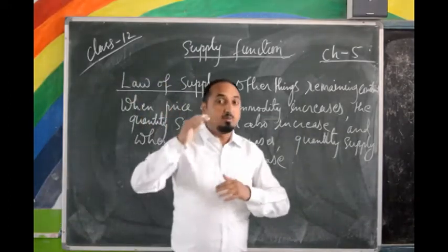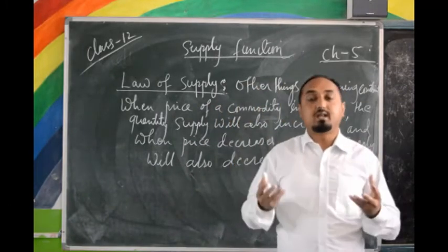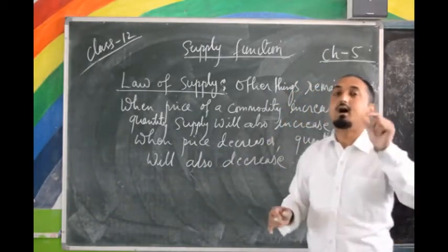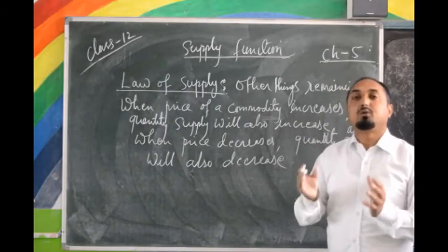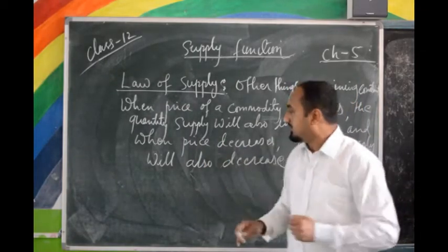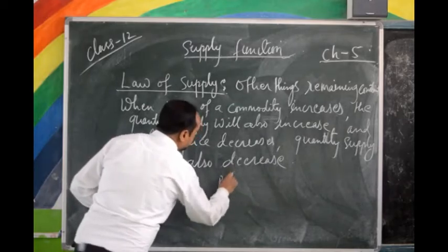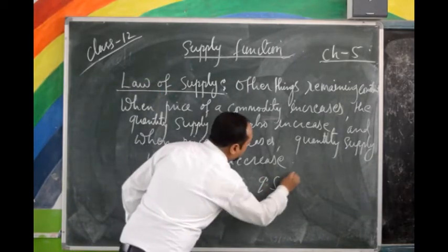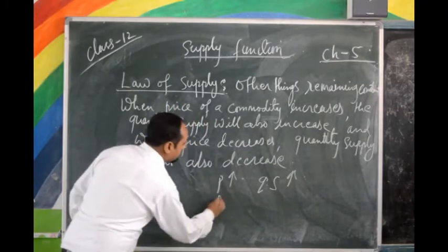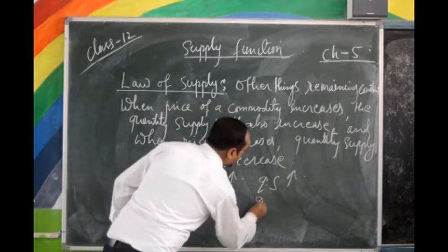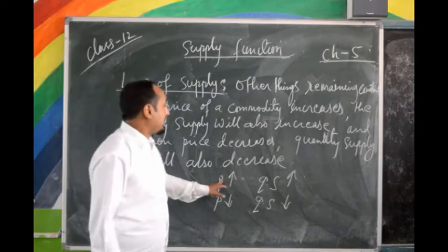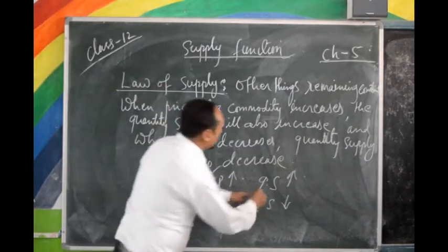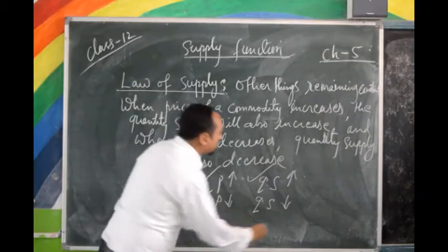When the price of a commodity increases, the producers will be willing to produce more and offer more for sale in the market — meaning supply will increase. But when price decreases, producers will be willing to supply less in the market. Both price and quantity of supply are moving in the same direction: if price is increasing, quantity of supply is also increasing; when price is decreasing, quantity of supply is also decreasing.